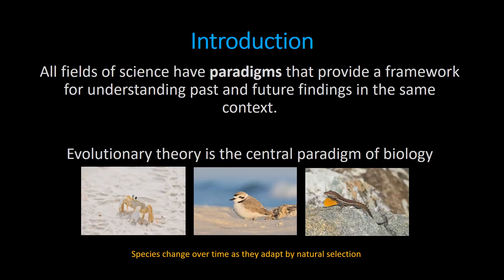For example, evolution by natural selection is the central paradigm of biology. It basically means that species change over time — they're adapting to their environment through natural selection. That means that basically all modern species are descendants of ancestral species. That one theory explains the unity and diversity of life.